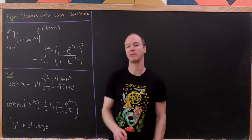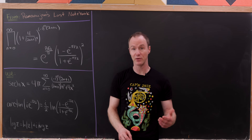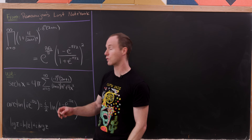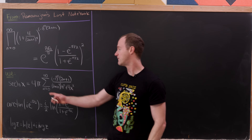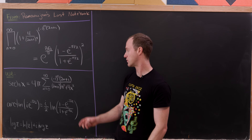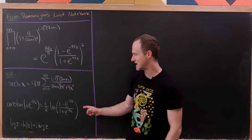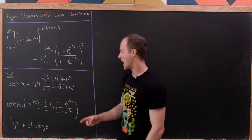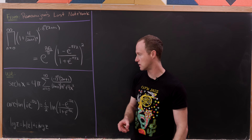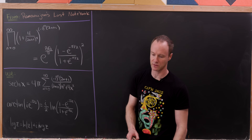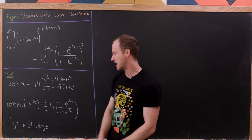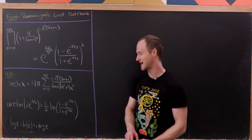I have a previous video on the channel about the Catalan constant if you'd like to check it out. We'll use the hyperbolic secant identity: sech(x) equals 4/pi times the sum as n goes from 0 to infinity of (-1)^n (2n+1) over [(2n+1)^2 pi^2 + 4x^2]. We'll also use an identity relating the inverse tangent and the logarithm, and the complex logarithm: log(z) equals the natural log of |z| plus i times the argument of z.